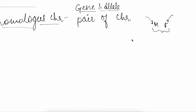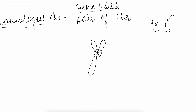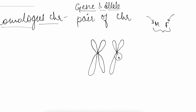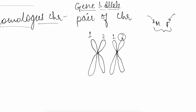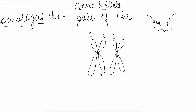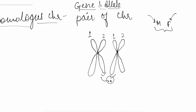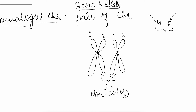If I draw a homologous chromosome pair: this is chromatid 1 and this is chromatid 2 — as previously discussed, these are sister chromatids. This is the chromosome from one homolog and this is from the other, so these are non-sister chromatids. When we consider the full homologous pair, these are also non-sister chromatids.